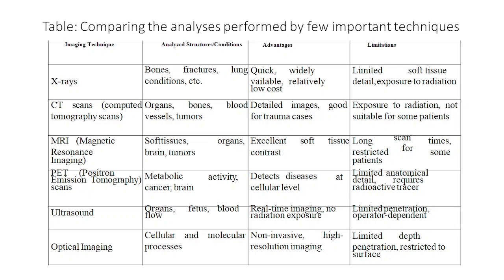CT scan stands for Computed Tomography scan. It is used for imaging organs such as the brain and lungs, as well as bones, blood vessels, and tumors. Advantages include detailed imaging and being well-suited for trauma and emergency cases. Limitations include radiation exposure and not being suitable for some patients. MRI is used for soft tissues, organs, brain, and tumors, offering excellent soft tissue contrast not achievable by other techniques, though it has long scan times and is restricted for some patients.